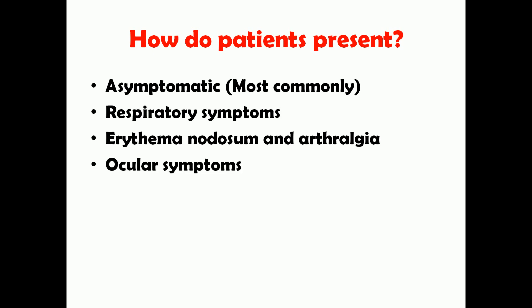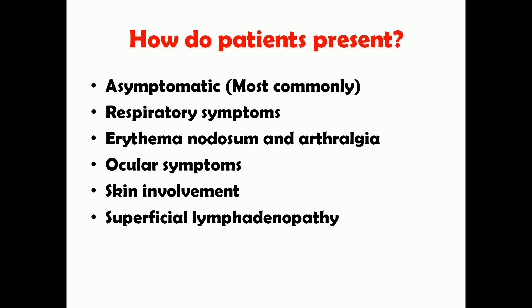Ocular symptoms such as uveitis, which can lead to pain and blurring of vision, can occur in some patients. Skin involvement is also common, as is superficial lymphadenopathy — enlargement of lymph nodes around the neck. Other signs include elevated calcium levels in the blood, called hypercalcemia, as well as hepatomegaly and splenomegaly — enlargement of the liver and spleen respectively.